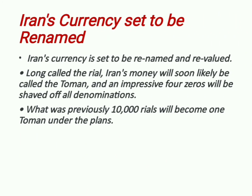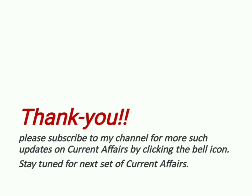Iran's currency is said to be renamed and revalued. Long called the Rial, Iran's money will soon likely be called the Toman, and four zeros will be removed from all denominations — so what was previously 10,000 Rials will become one Toman under the plan.